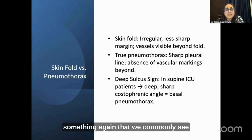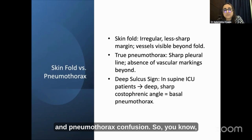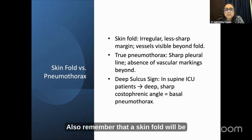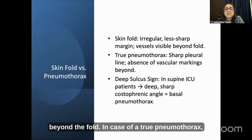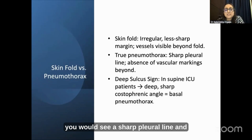Something commonly seen in regular practice is confusion between skin fold and pneumothorax. It is not very difficult when you use a systematic approach. Remember that a skin fold will be irregular, with less sharp margins and vessels visible beyond the fold. In the case of a true pneumothorax, you would see a sharp pleural line and absence of vascular markings beyond.